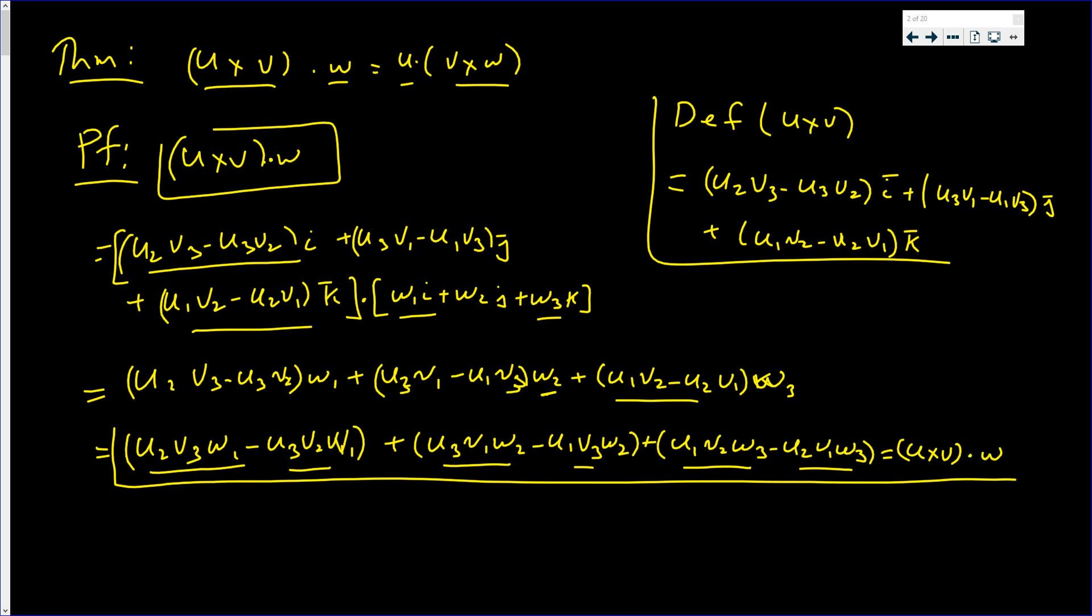Now I want to get u dotted with something. Let's see if we can pull this off. What's u1? The only two terms that have u1 is this one and this one. I'll factor out u1 and I'll have v2 w3 minus v3 w2.